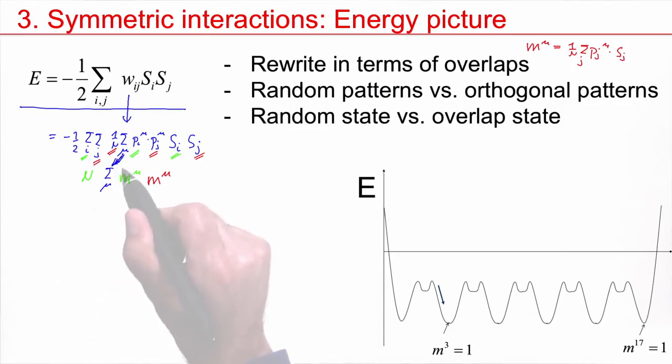And we still have the minus one half in front. So I have minus one half, a factor N, and then sum over mu, M^mu squared.